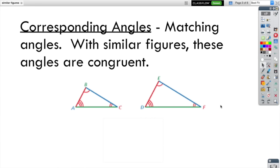The next thing is, well then what are corresponding angles if they're not the exact same shape? Well of course corresponding angles are just like before, they're the matching angles. A matches with D, B matches with E, C matches with F.